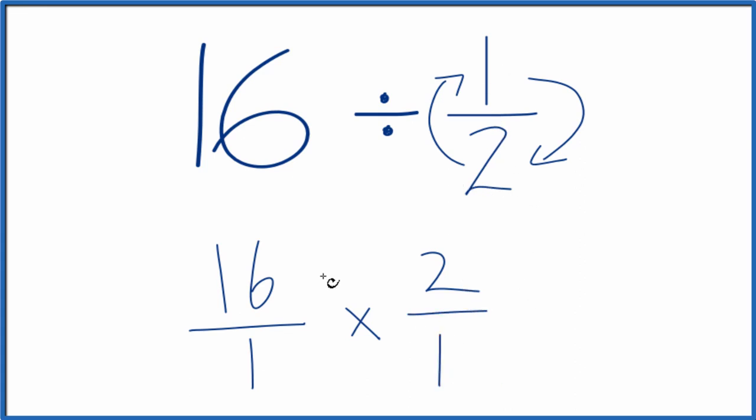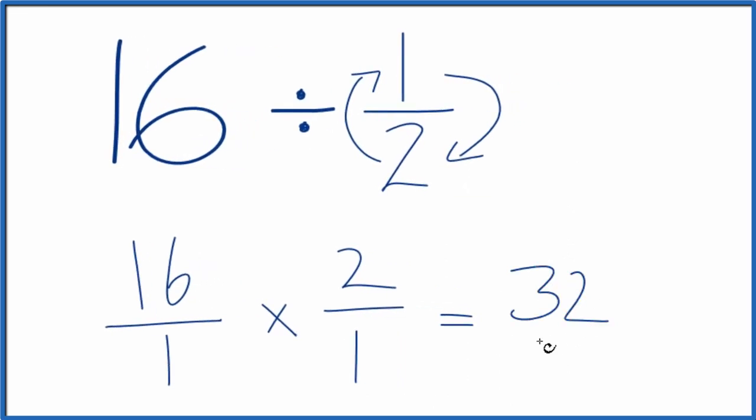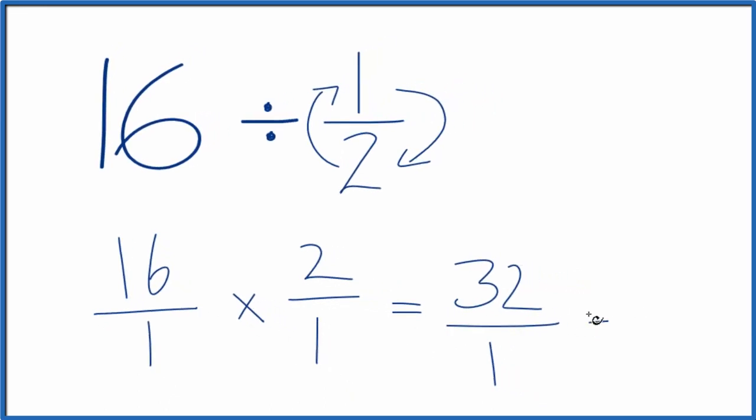Now when we multiply these fractions, we multiply the numerators and the denominators. That'll give us our answer. So 16 times 2, that's 32. And then 1 times 1 is just 1. So 32 over 1 is 32.